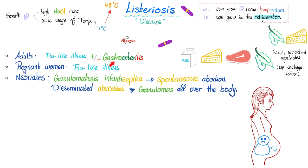In adults: flu-like symptoms, plus or minus gastroenteritis in the form of watery diarrhea. Pregnant women also get flu-like illness. In neonates, that's the severe one — granulomatosis infantiseptica — which can lead to miscarriages, stillbirth, or premature birth. Infantiseptica: sepsis because of a bacterial infection spread into the bloodstream, infanti because it's an infant, and granulomatosis because there are many granulomas.